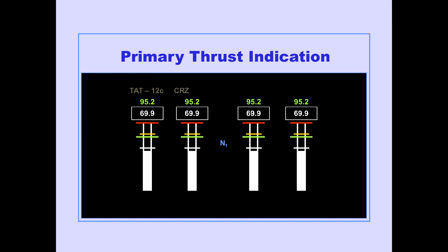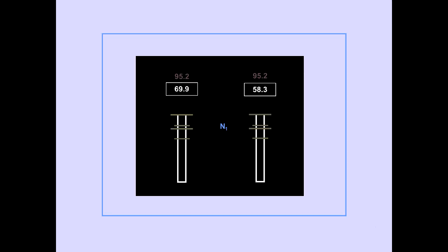N1 RPM is the primary thrust indication for the General Electric engine. N1 is displayed on ICAS as part of primary engine indications. Normal operating indications for N1 RPM are displayed by white digital and vertical indicators. The digital indicators show numerical value, while the vertical indicators move to show relative value.